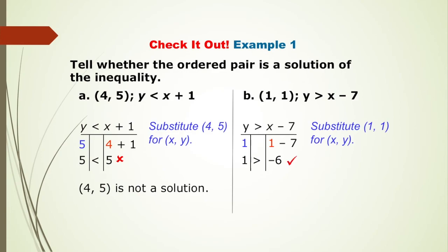remember that all positive numbers, including 0, is greater than negative numbers. Therefore, 1 and 1 is a solution to this inequality. Thank you for watching.